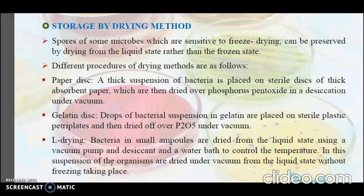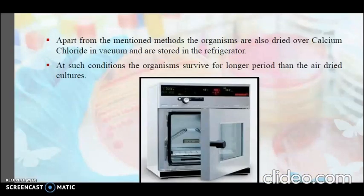The next method is L-drying, or liquid drying. It is a useful alternative method of vacuum drying for preserving bacteria that are sensitive to the initial freezing stage of the normal lyophilization process. Bacteria in small ampoules are dried from the liquid state using a vacuum pump, a desiccator, and a water bath to control temperature. The organisms are dried under vacuum from the liquid state without freezing. Apart from these, organisms are dried over calcium chloride in vacuum and stored in a refrigerator, where they survive longer than air-dried cultures.